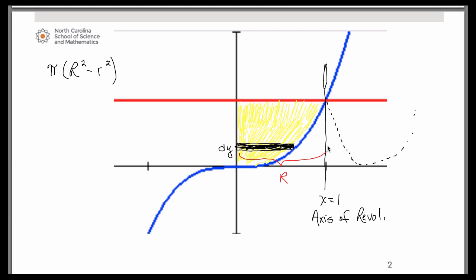And we're going to use this right minus left idea. So if we want an expression for big R, on the right it's hitting the vertical line x equals 1. On the left, it's hitting the y-axis. So we're doing right minus left. So that capital R is 1 minus 0, which equals 1.